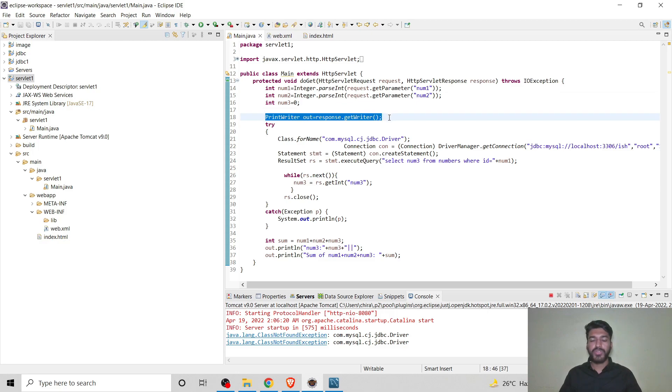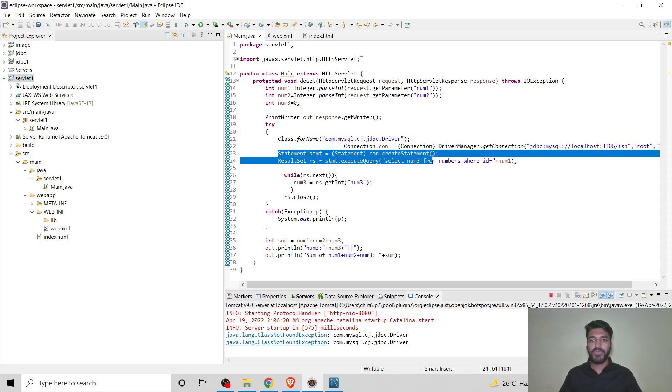This is our main.java file in which num1 and num2 are entered by the user, and I have initialized num3 as 0 currently. PrintWriter, this line is used if we want to print something over the browser. Class.forName, this line is used for driver class. Connection, this line will set up the connection with our database. ISH is the database I am using currently. Root is my username, and after that you have to provide your password.